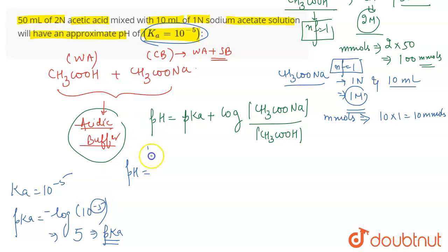Plus log of the concentration of CH3COONa will be the millimoles divided by the volume. We are taking the volume in ml only therefore we are taking the number of moles in millimoles. And if we talk about acetic acid then it has 100 millimoles and the volume is again 50. So we can simply take the ratio of millimoles only. So therefore pH becomes 5 plus log of 10 by 100 means log of 1 by 10.